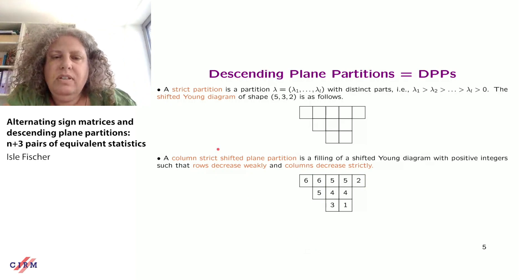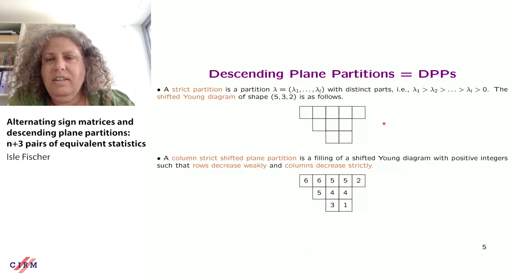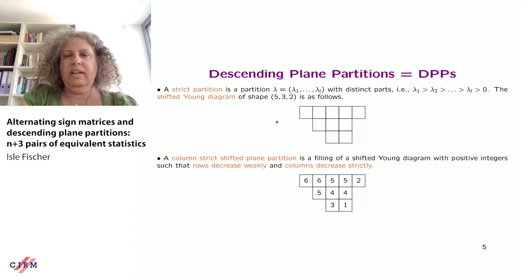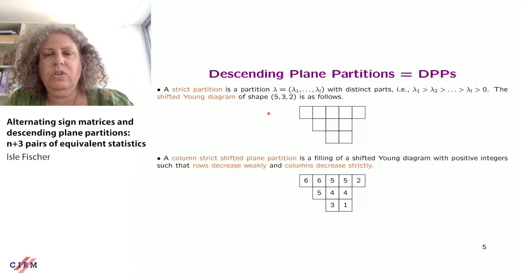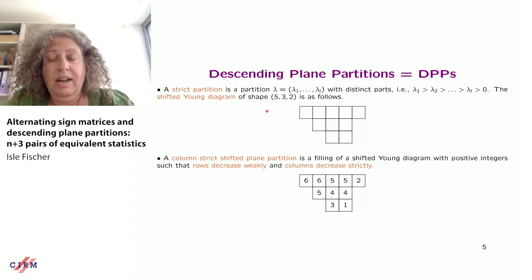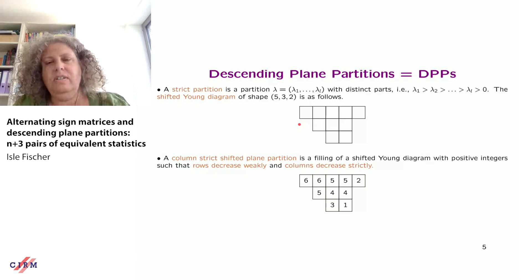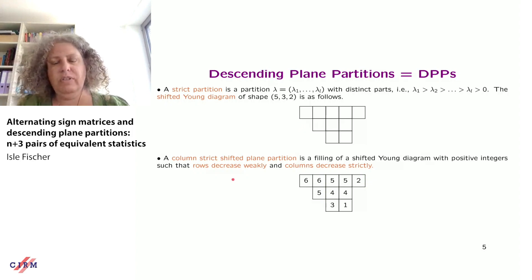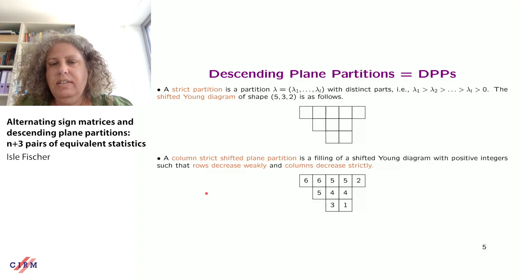Now let's come to the second type of object: descending plane partitions. A strict partition is strictly decreasing, so all parts are distinct. Given such a partition you can consider the shifted Young diagram — for the strict partition (5,3,2), in row i you have λ_i entries with a staircase shape on the left. We fill integers into these cells to form column-strict shifted plane partitions, where rows decrease weakly and columns decrease strictly.